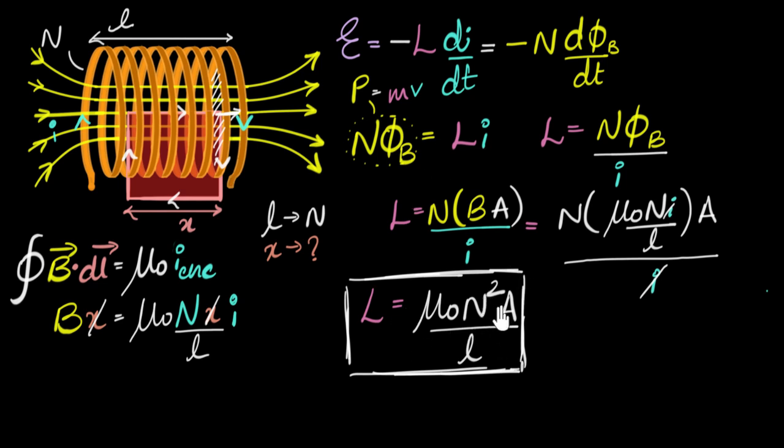It says that more area also gives you more self-inductance. Why is that happening? Because with more area, you tend to get more flux for a given current. So that's how self-inductance tends to increase. And it says that if you increase the length, you tend to decrease the self-inductance. Why is that? Well, that comes from here.